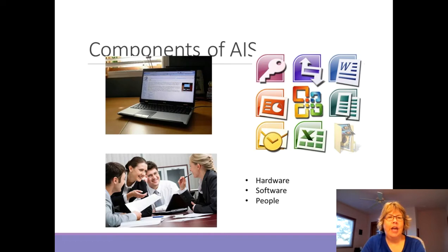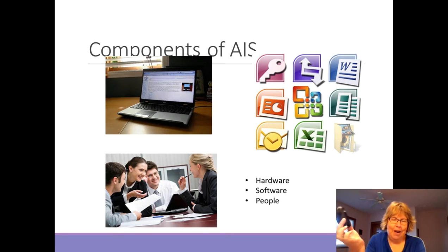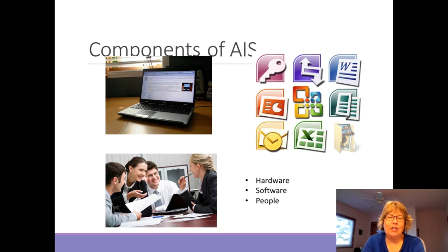What are some of the components of an accounting information system? First is hardware — anything from a laptop to a smartphone, large servers, and networking equipment like routers, even your mouse. Second is software — the picture shows Microsoft Office Suite as a basic example. In this class we'll use Excel, QuickBooks, and Tableau, among others. There are also ERP systems, which we'll talk about in the next chapter.